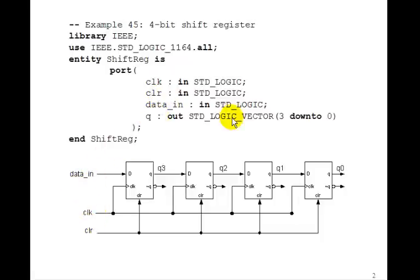And the output will be Q3 down to 0, Q3, Q2, Q1, Q0. So those will be the outputs.